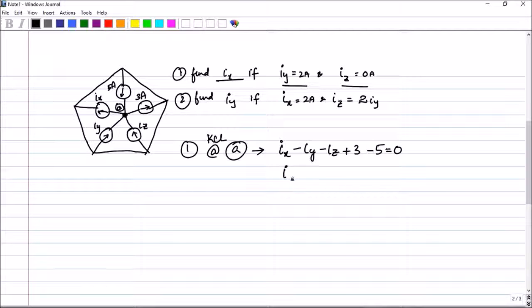So what do you get. Ix. This is minus 2. And minus 0. Plus 3. Minus 5 equal to 0. Therefore, you get Ix to be equal to 5 minus 3 plus 2. And therefore, Ix will be equal to 4 amperes.